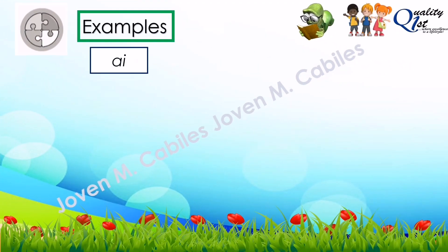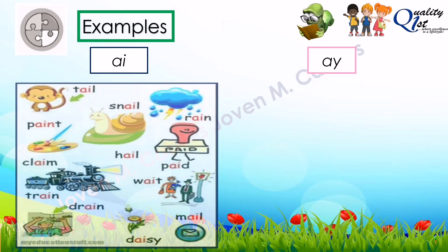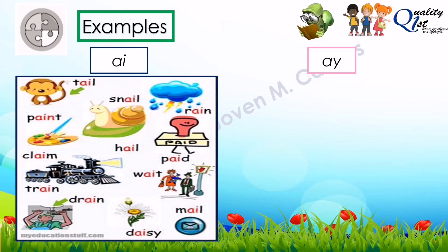Let's have the examples. We have the AI digraph and the AY digraph. For AI, we have: tail, paint, snail, rain, claim, hail, paid, weight, train, drain, daisy, and mail.